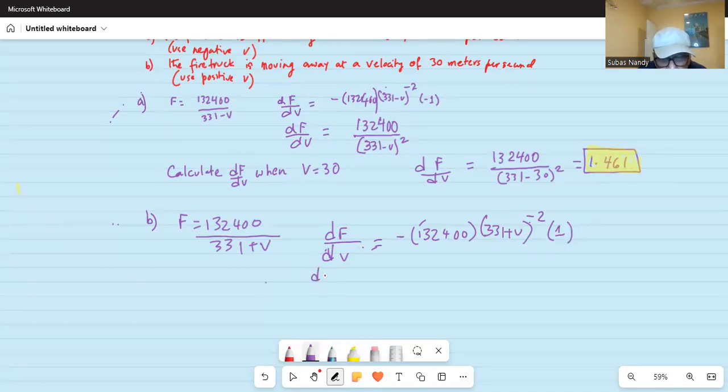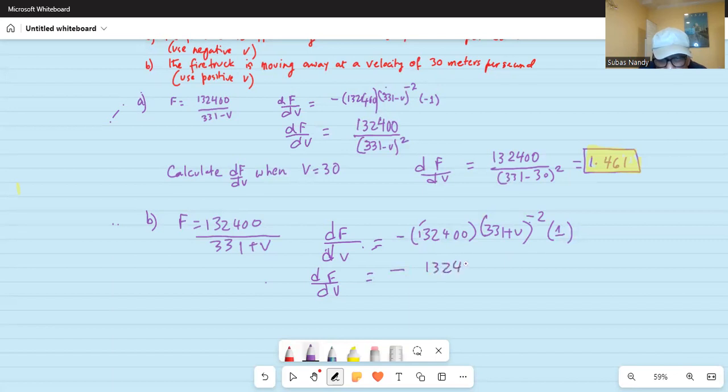So this becomes df by dv is equal to minus 132,400 divided by 331 plus V square.